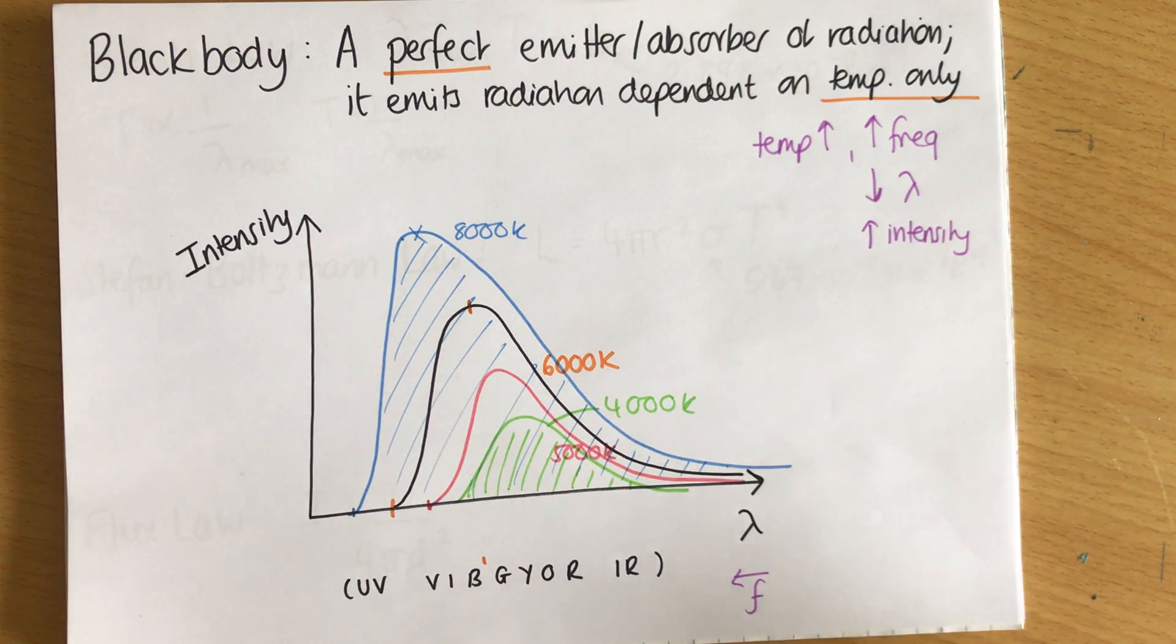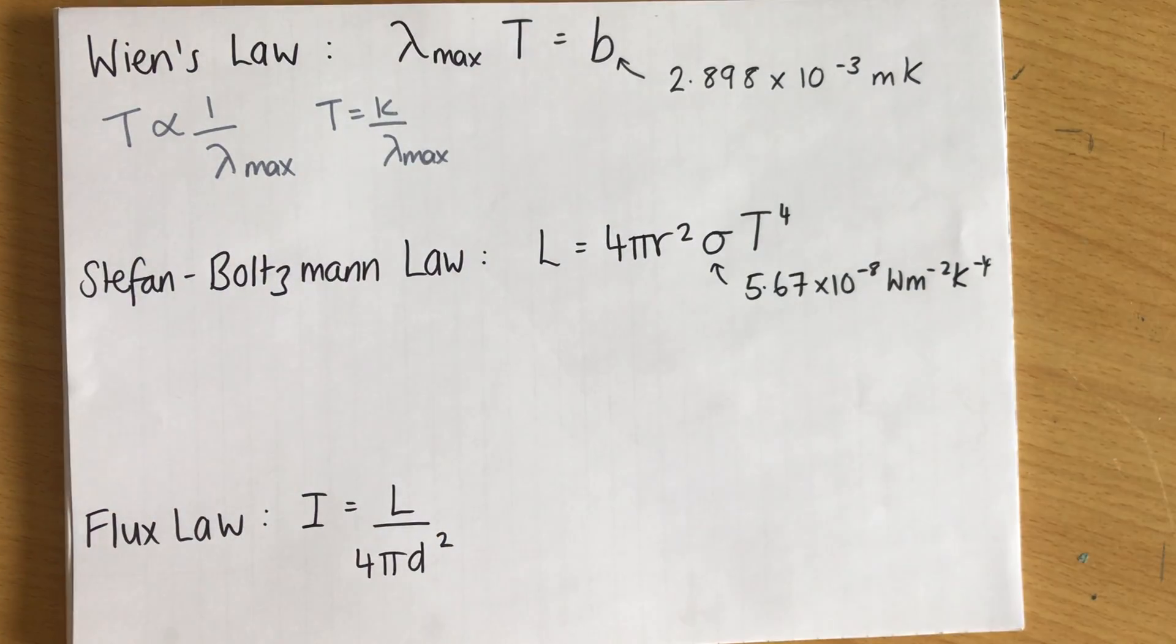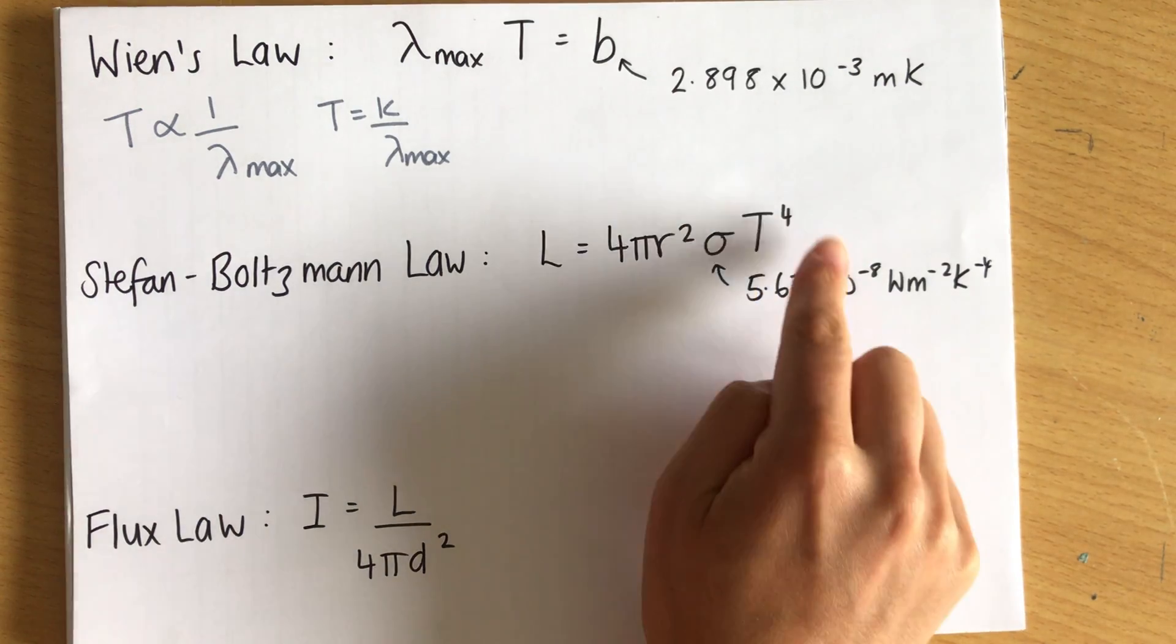So the area underneath isn't double, the area underneath is actually 16 times bigger. So if I double temperature, I 16 times the area, and 16 is double, which is 2, to the 4. So 2 times 2 times 2 times 2 gives 16. And this hints at the Stefan Boltzmann law. It involves a T to the 4 term.